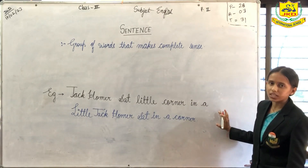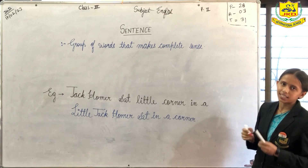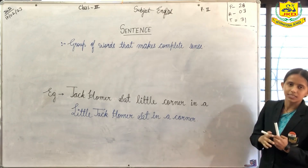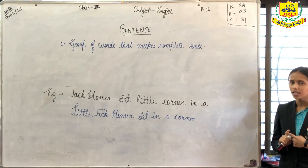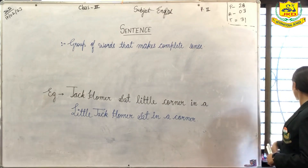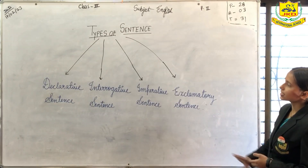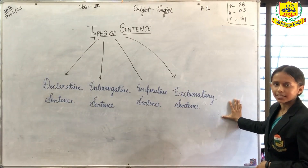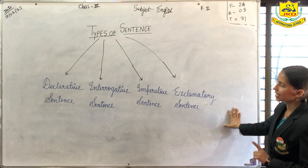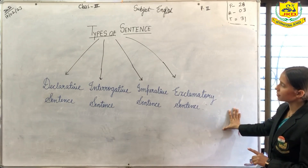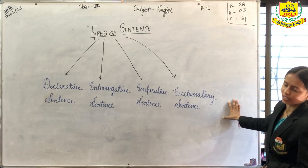So based on the sense of the sentence, sentences are divided into four parts. Basically there are four parts, but one part is also additional. So based on the type of sentences, sentences are divided into four parts. First is declarative, second interrogative, third imperative, and fourth exclamatory.